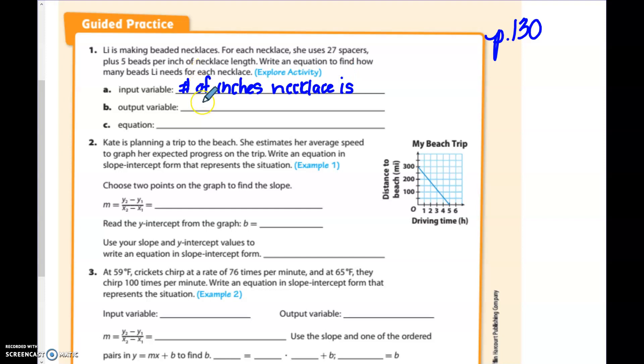Number of inches necklace is. That's our input. The output is going to be the number of beads. So our equation, remember, is going to be Y equals blank X plus blank. So the initial value, no matter what, the Y intercept that she is using here, which is also called the initial value, is 27. So that's the number that goes in this last blank here, 27. And then she's got five beads per inch. So we're going to put a five in here. So our equation is Y equals 5X plus 27.